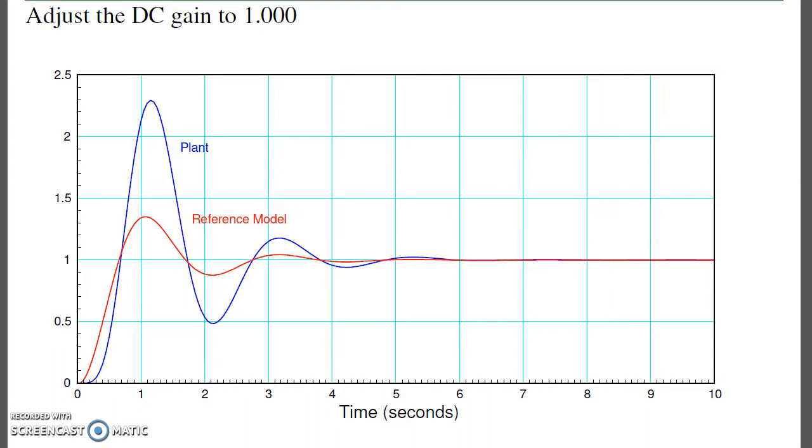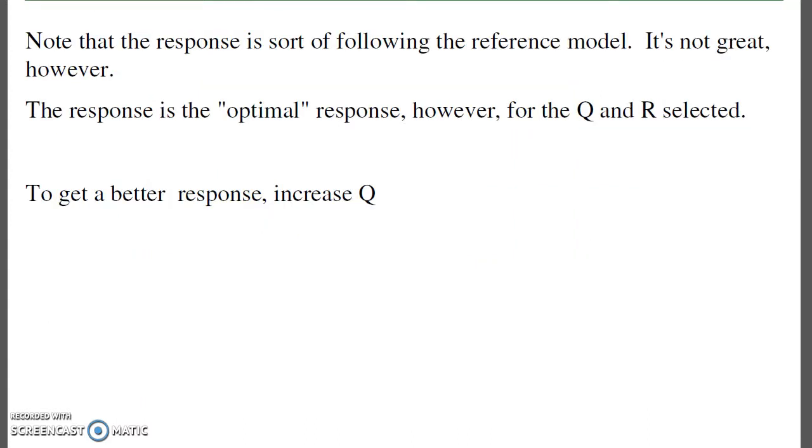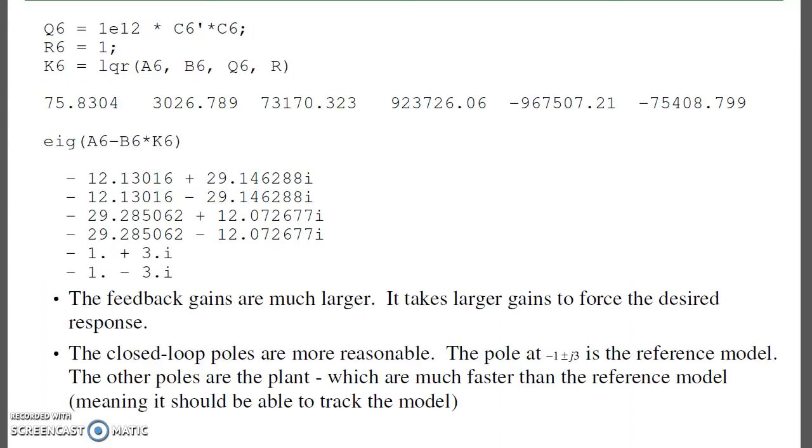If I want better tracking, what I do is increase alpha, meaning increase Q. Changing Q to be 10 to the 12th times C transpose C, I get another set of feedback gains. Note the gains are getting larger.